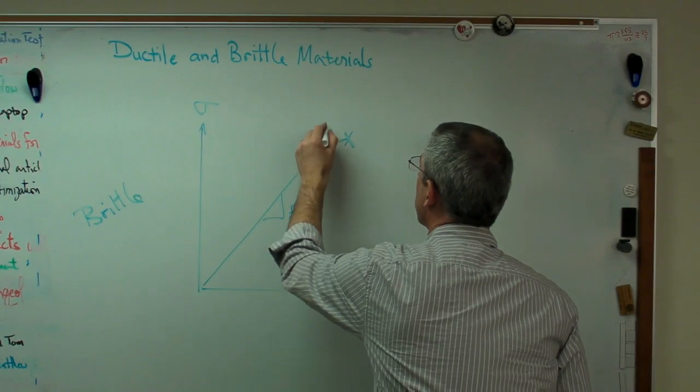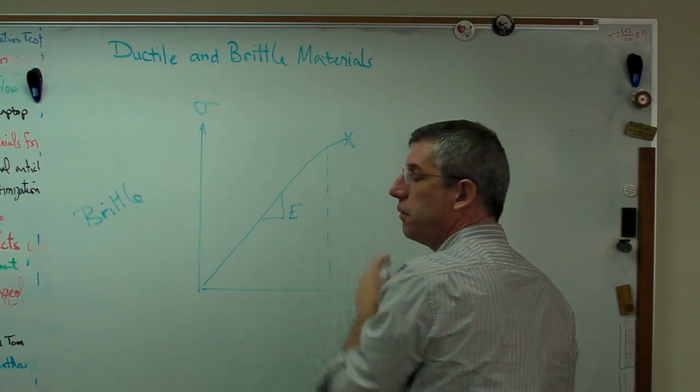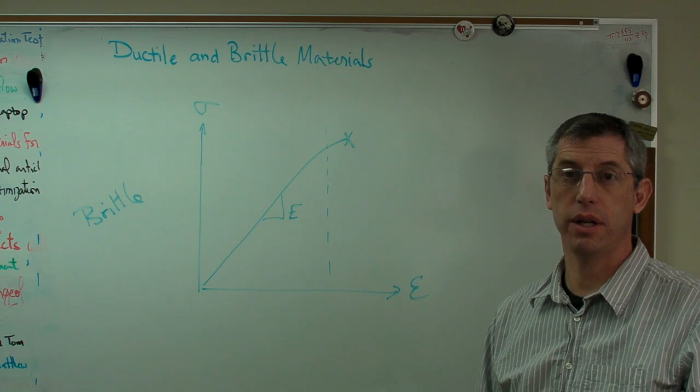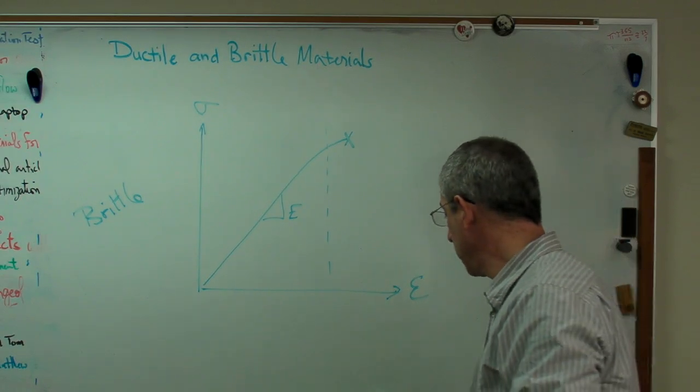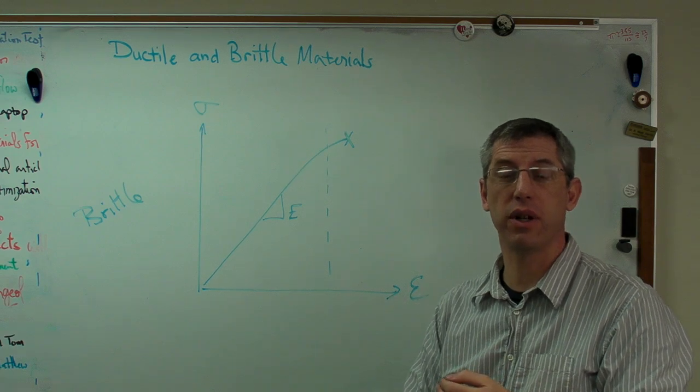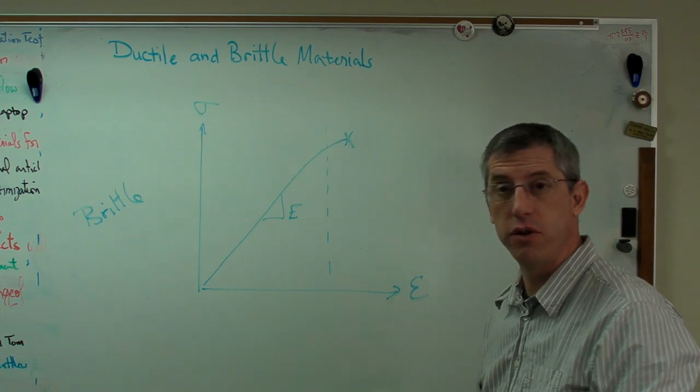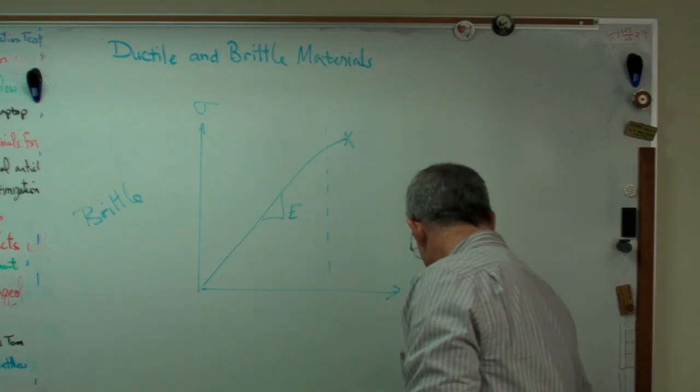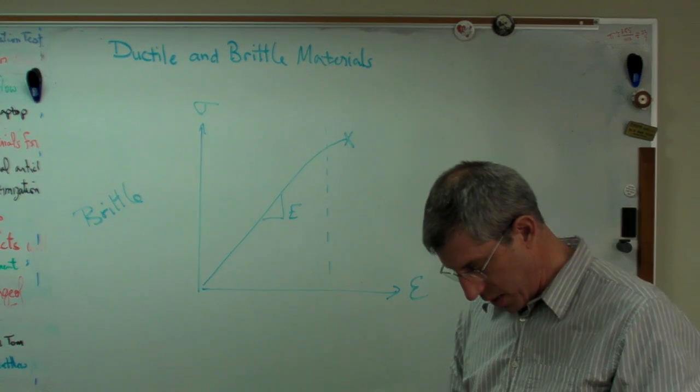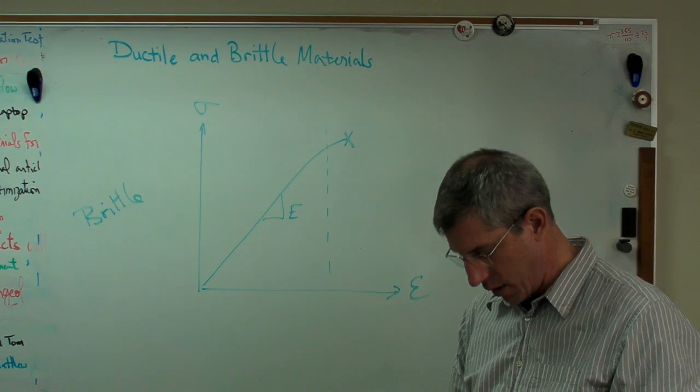There's a very small or maybe no plastic deformation region. All right, brittle materials include cast iron, heat treated steel, glass, ceramic, piece of chalk. Let's get the piece of chalk back out. And if I get this back together again, there we go.